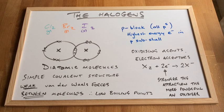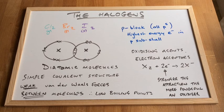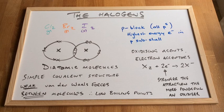I haven't just chosen those colours at random. Chlorine is pale green, bromine is orange, and iodine is purple. And you can see underneath the state symbols there: gas for chlorine, liquid for bromine, and iodine is a solid. I'll come back to that in a moment.